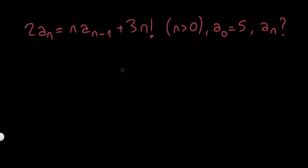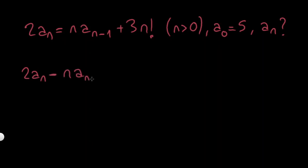Hi there! I have a nice recurrence relation problem for you and let's see how we can solve it. First let's gather everything that includes a_n on one side. So I have 2a_n minus n·a_{n-1} being equal to 3·n factorial.